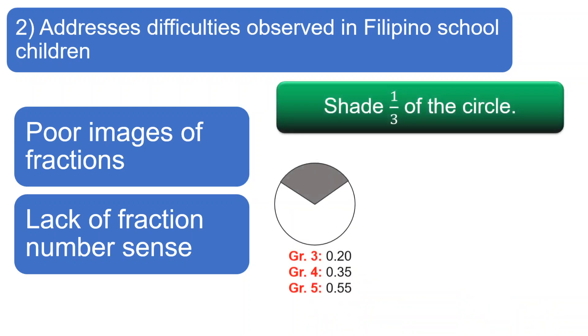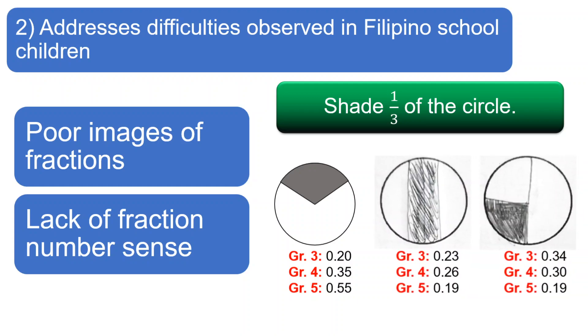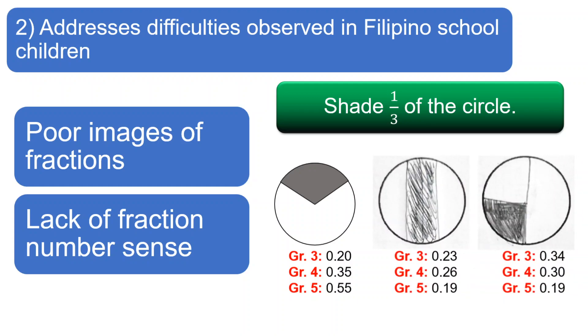Sa isa pang tanong, pina-shade namin sa mga bata ang one third ng isang bilog. Makikita ninyong kaunti lang ang nakakuha ng tamang sagot. Sa mga grade 5, 55% lang. Ang nangyari, marami kaming nakitang misconception na makikita nyo rin sa picture na ito. Para sa mga batang ito, hindi malinaw sa kanila ang ibig sabihin ng one third. E paano pa natin silang aasahan mag-add o mag-subtract ng fraction?